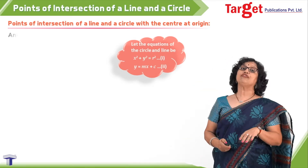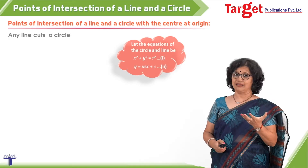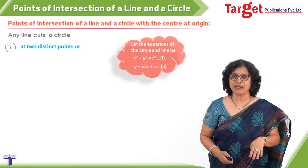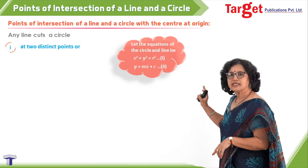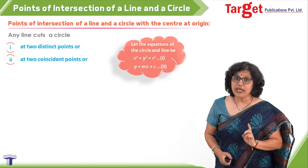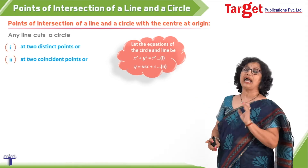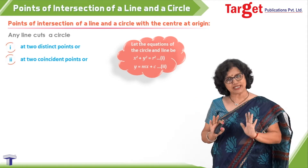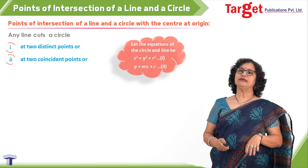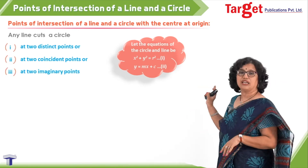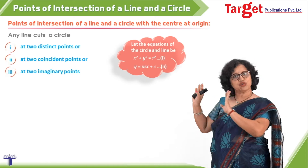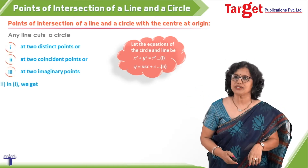If a line has to meet the circle, we know that various cases are expected. One: it meets the circle at two distinct points. Second case: it meets the circle at two coincident points, meaning the line touches the circle. And the third case is imaginary points. Let us write this in terms of x and y and handle the situation.